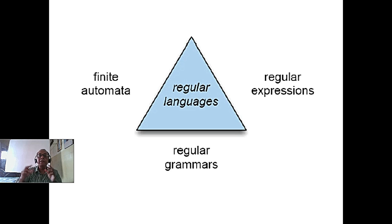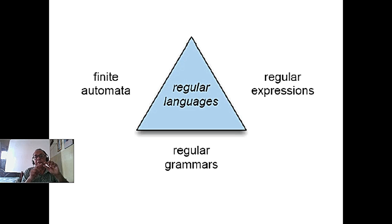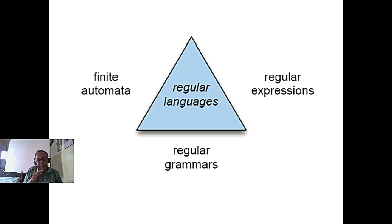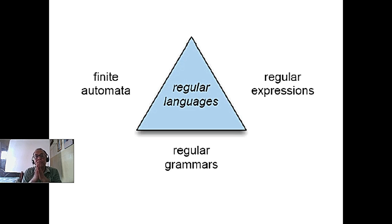When the variable comes always at the end of the right-hand side, it is called right linear grammar. When the variable comes at the beginning and not at the end, it is called left linear grammar. Both are linear grammars. A language has rules: start with variable S; the right-hand side can be one variable, or a terminal followed by a variable — but if there are two variables or a variable-terminal-variable pattern, it is no longer a regular language.